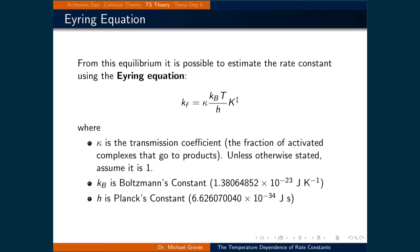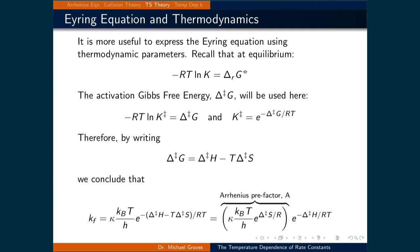From this equilibrium, it is possible to estimate the rate constant using the Eyring equation, which states that the rate constant K is equal to kappa times the Boltzmann constant times T divided by Planck's constant H times the equilibrium constant K double dagger, where kappa is the transmission coefficient — the fraction of activated complexes that actually go to products. Unless otherwise stated, always assume that kappa is equal to 1. This equation is based on the idea that the thermal energy is equivalent to the vibrational energy along the direction that the activated complex would vibrate and break apart to form a product.